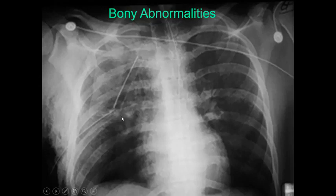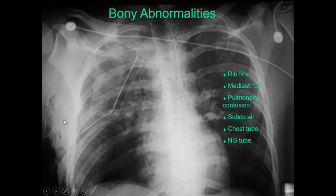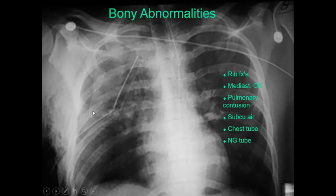The mediastinum may appear widened with pulmonary contusions and opacities in the lung fields. Other structures such as a chest tube and NG tube are also visible.